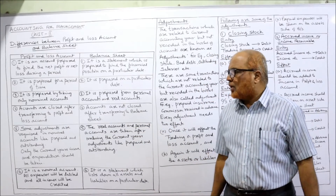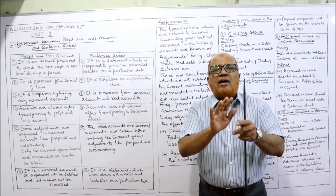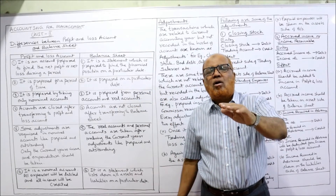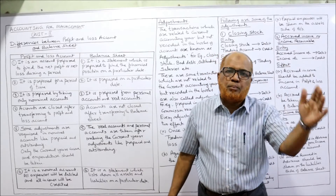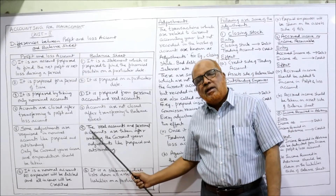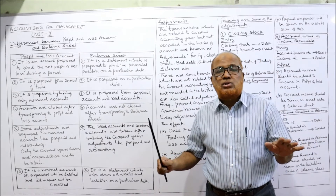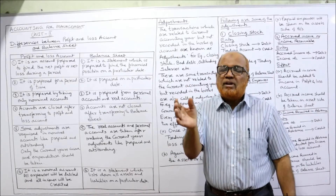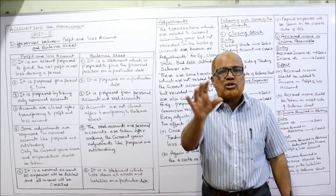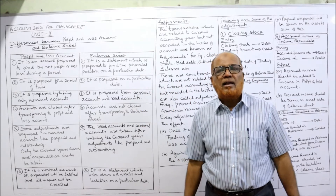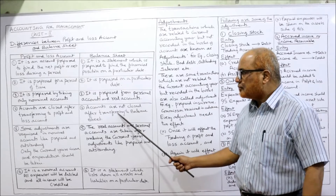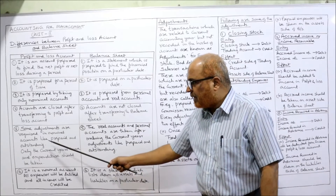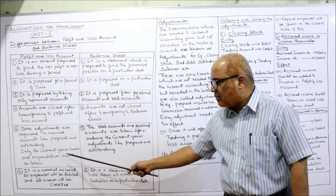Fourth difference — account closure. After transferring to the profit and loss account, nominal accounts are closed every year. But real accounts and personal accounts are not closed — they continue. Even after taking the amounts in the balance sheet, the personal and real accounts remain open and carry forward.